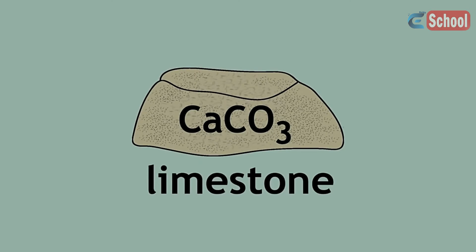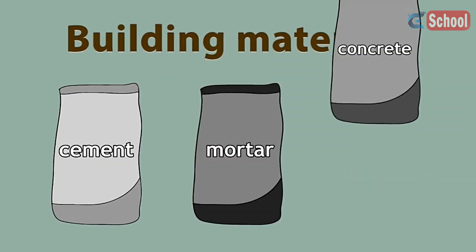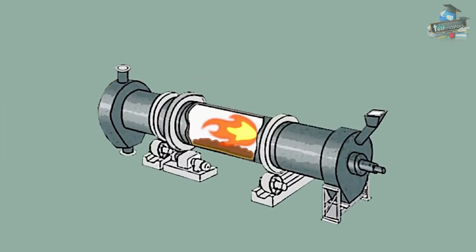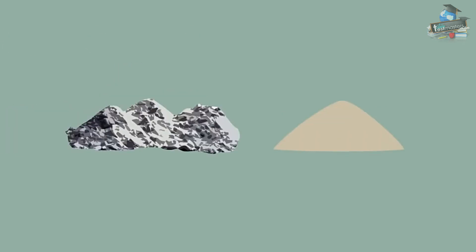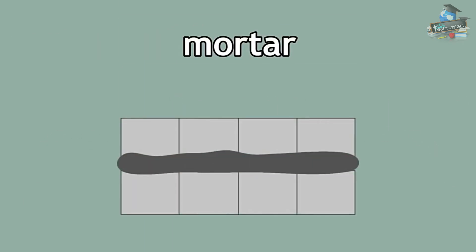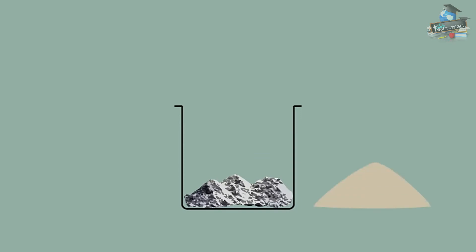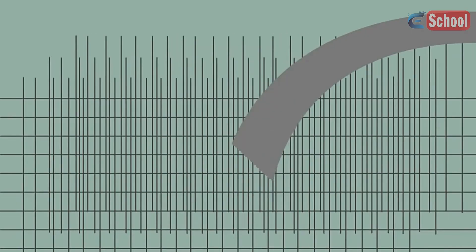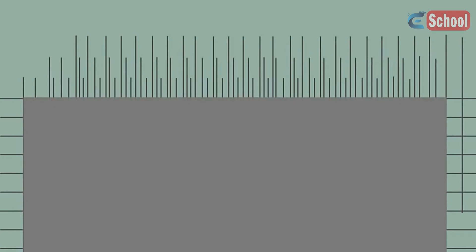Limestone can be used to make other building materials such as cement, mortar, and concrete. When limestone is crushed and heated with clay in a rotary kiln, cement is made. Cement can be mixed with sand and water to produce mortar, which is used to glue bricks together. Cement can also be mixed with sand, gravel, and water to produce concrete. Concrete, when hardened, is very strong. Pouring concrete onto steel bar structures creates reinforced concrete, which is even stronger.